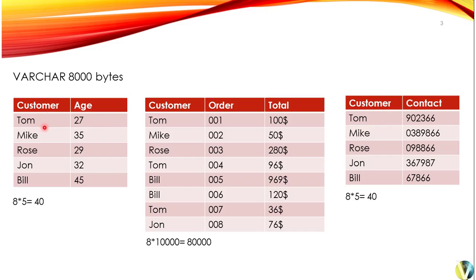Assume we have three database tables. The first table contains customer age-related information. The second table contains sales-related information — how much purchasing is done by a particular customer — so this table contains customer name, order number, and invoice total. The third table contains customer contact details.